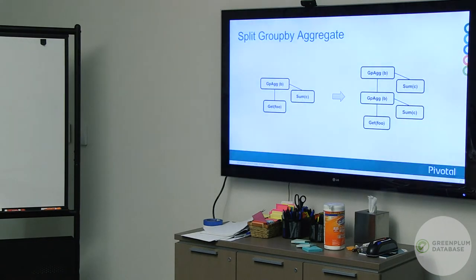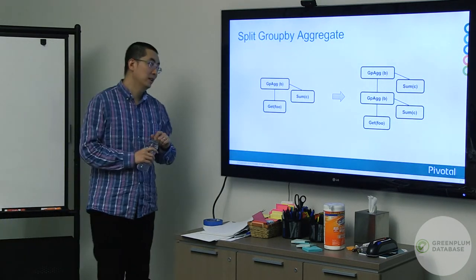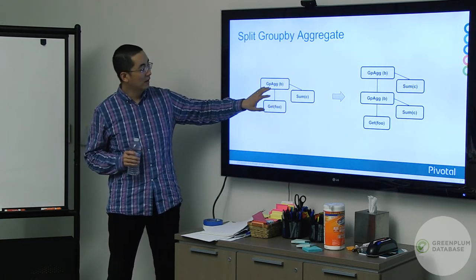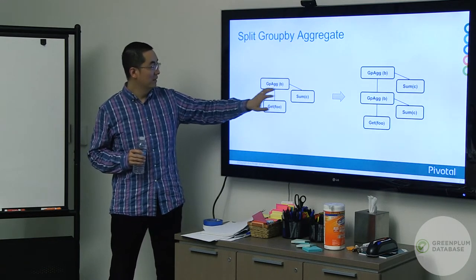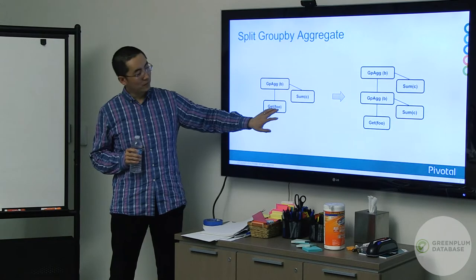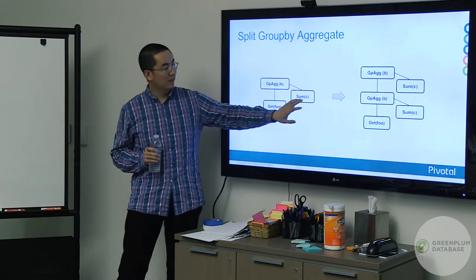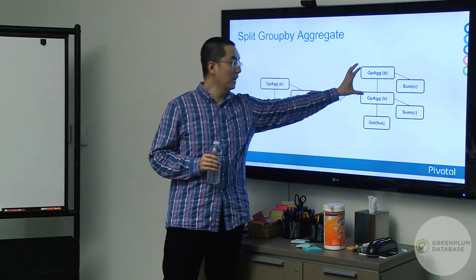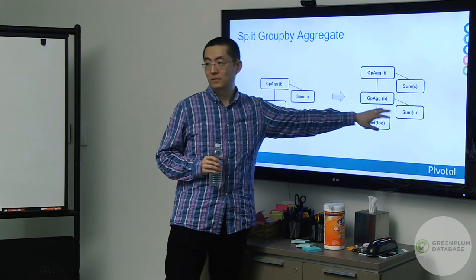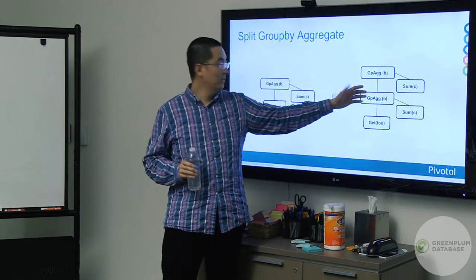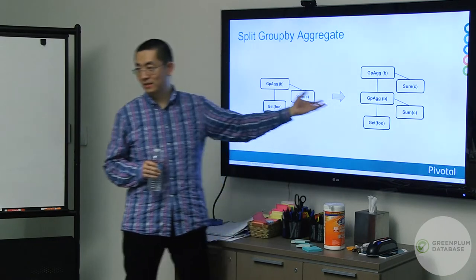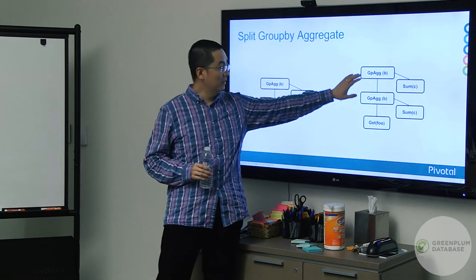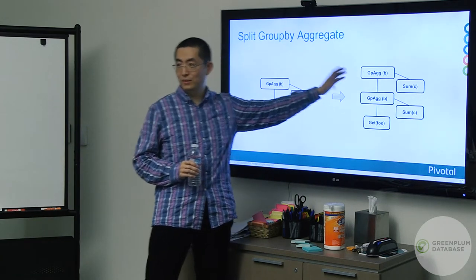To make that possible, we introduce a rule: if we see a group-by aggregate on column B with SUM of C from table FULL, that is semantically equivalent to splitting the group-by — doing a group-by on B with SUM at the local level, then another group-by on B with SUM at the global level. Even in a single-node environment it doesn't hurt — it's just redundant. But in the MPP environment, the local aggregate runs on the segment and the global on master, speeding up the query dramatically.